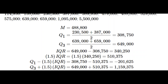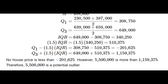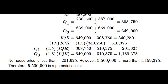We see there is no house price less than −$201,625. However, there is one price higher than $1,159,375, which is $5,500,000 — this is a potential outlier. This price is way more than the average prices in the range of houses, so we consider it a potential outlier. It could be either a data entry mistake or some discrepancy that we have to investigate carefully.